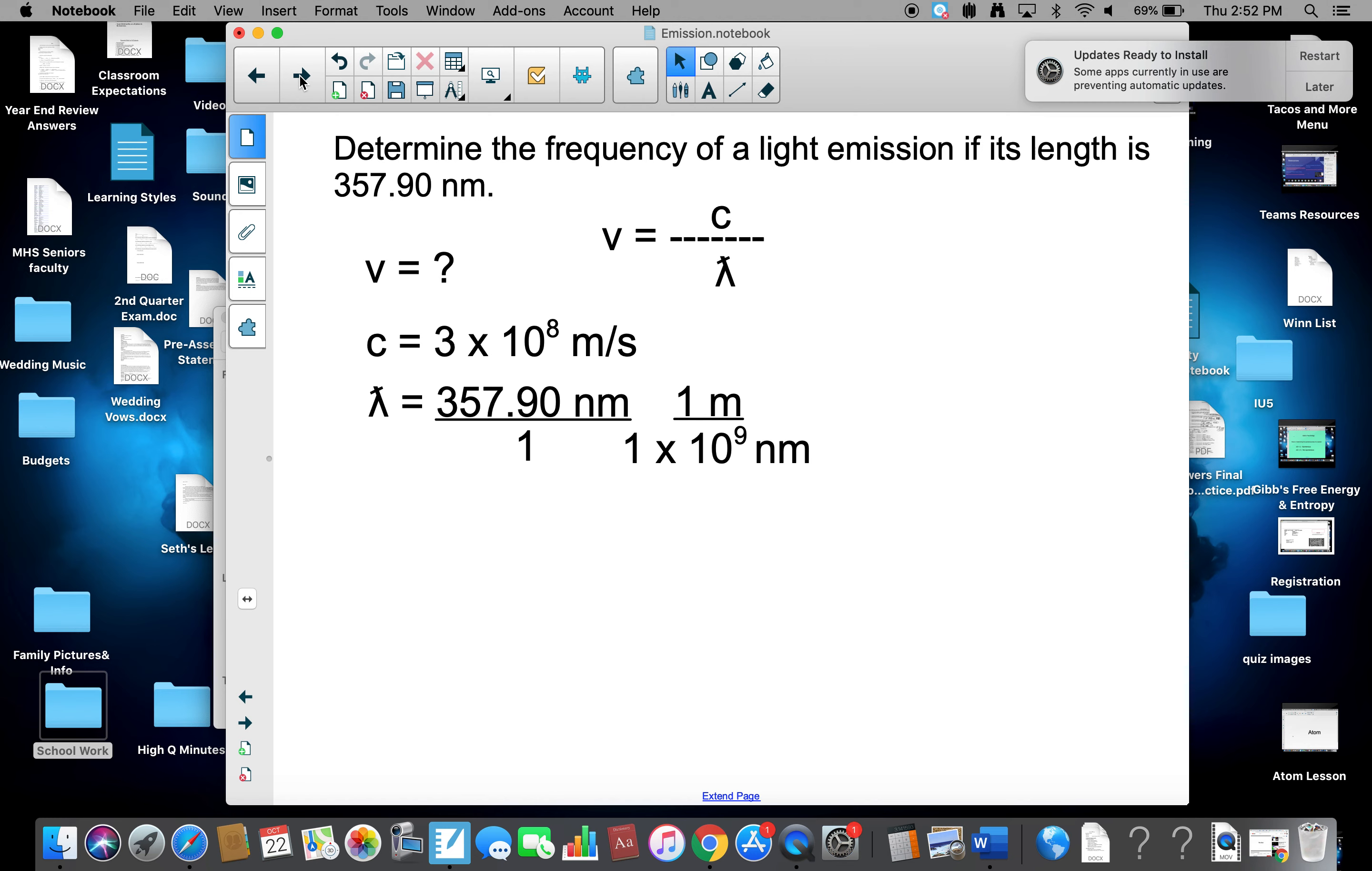So 1 meter is 1 times 10 to the ninth nanometers. They'll cross out, and I get 3.5790 times 10 to the minus seventh meters. So we plug our values in, 3 times 10 to the eighth meters per second, divide by 3.5790 times 10 to the minus seventh meters, which is 8.3822 times 10 to the 14th. Meters cross out per second.